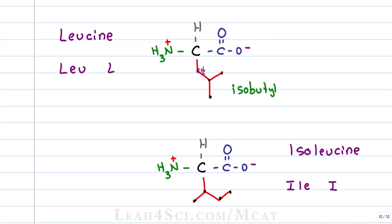Isoleucine which is ILE or I is an isomer of leucine, specifically a constitutional isomer. It has the same four carbon substituent but this time instead of having a branch at the end, all four are connected in a row where the substituent itself is attached on the second carbon to the parent chain and this secondary carbon attachment tells us that this is a sec-butyl substituent which is an isomer of isobutyl.